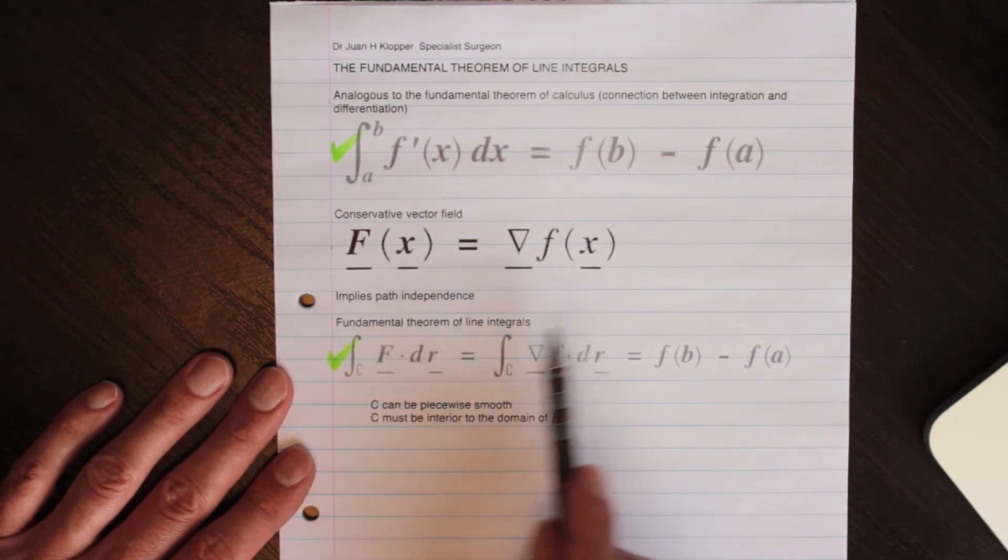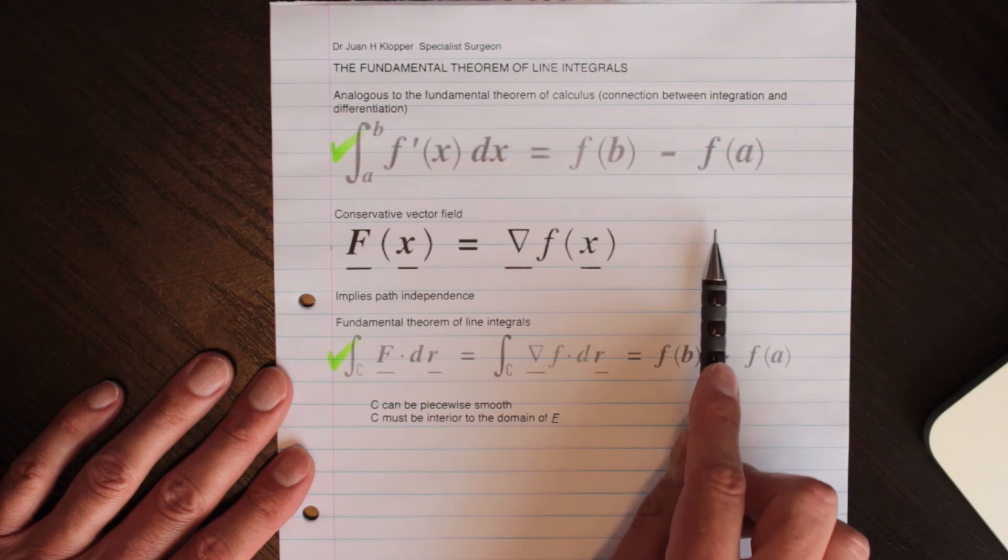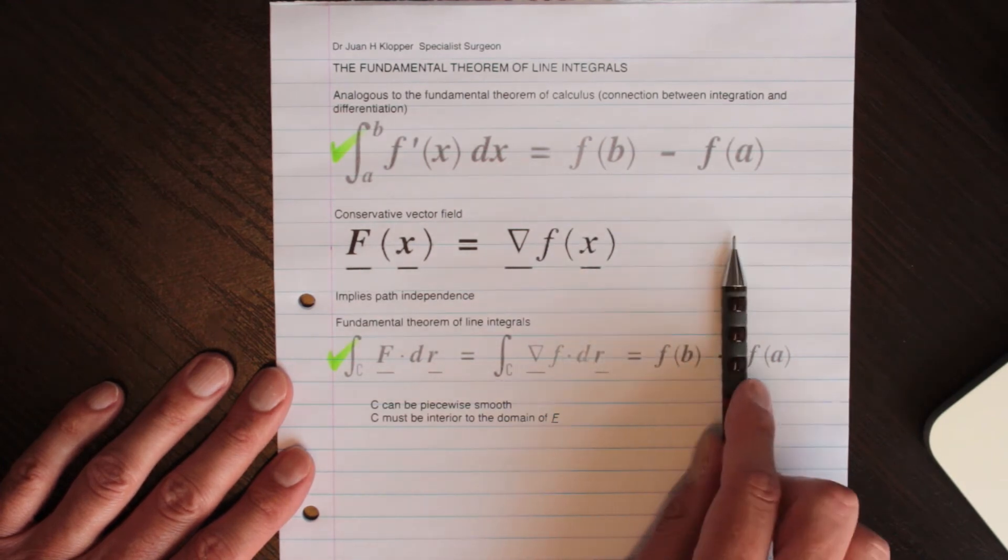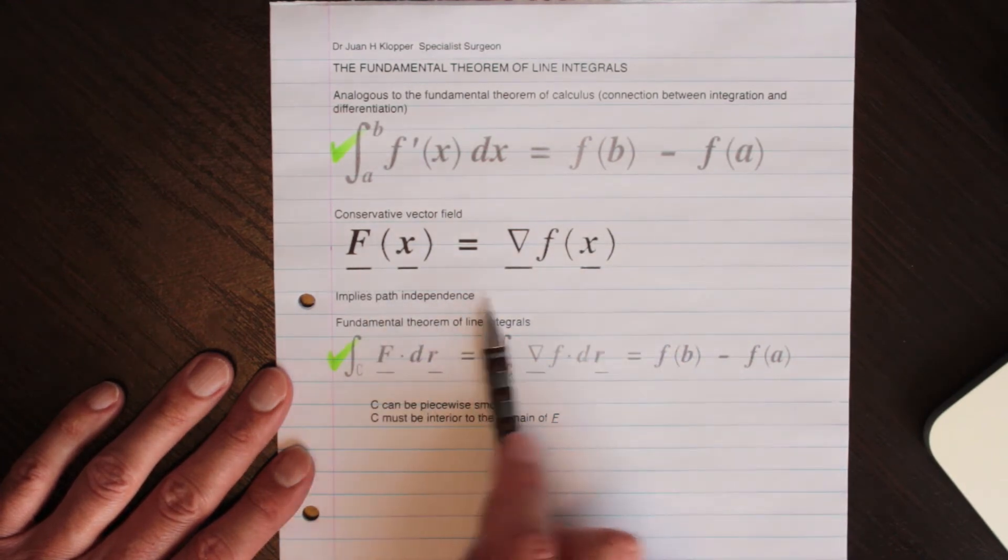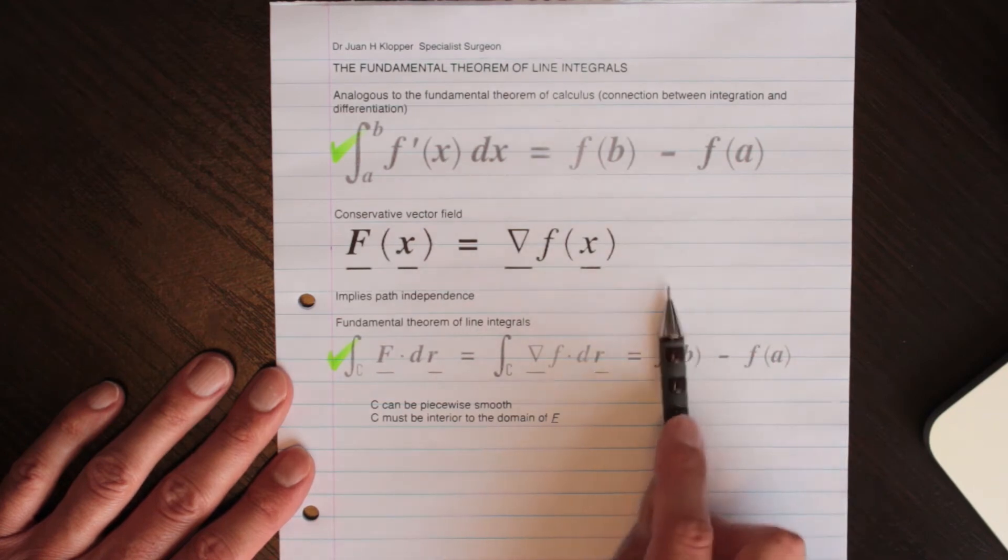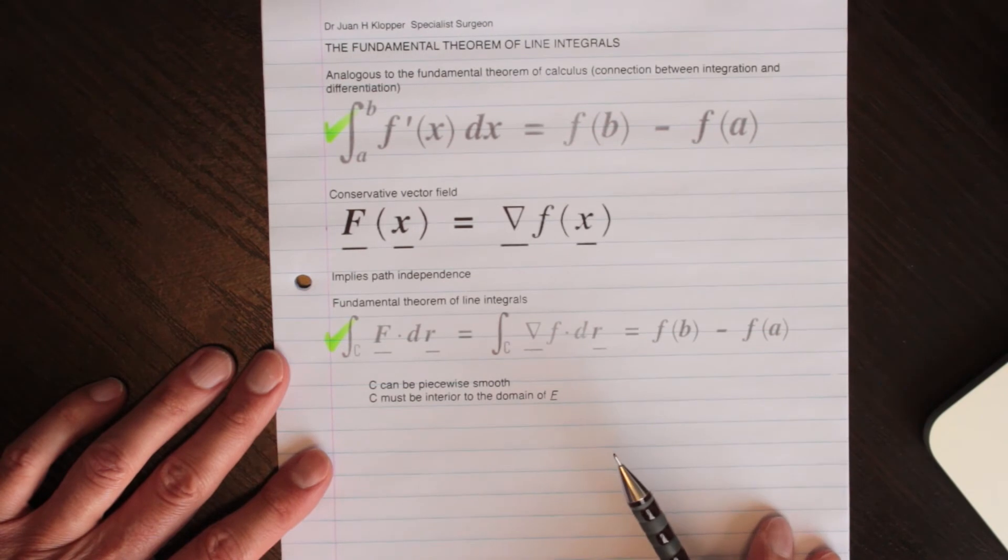And that does mean if we have the same initial point to the same final point, irrespective of the path we travel in, and that's called path independence, that our line integral was going to be exactly the same, and we've seen many examples now of that happening.